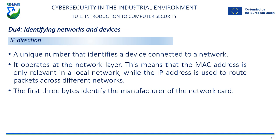An IP address is similar to a postal address in that it allows data packets to be sent and received correctly by the correct device on the network. There are two main versions of IP addresses: IPv4 and IPv6. IPv4 uses a 32-bit address format and is the most commonly used. However, because available IPv4 addresses are running out, IPv6 has been developed and uses a 128-bit address format, allowing for a much larger number of devices on the network.